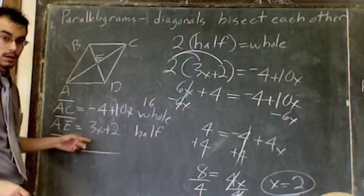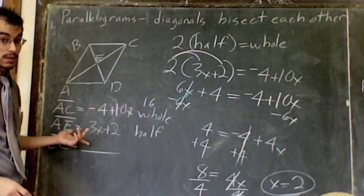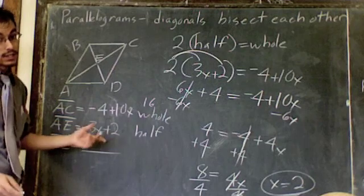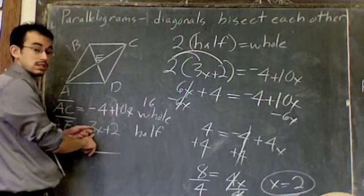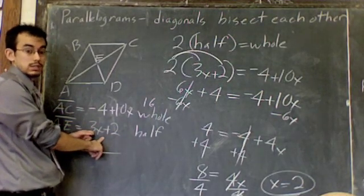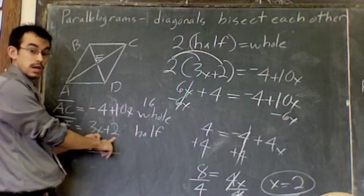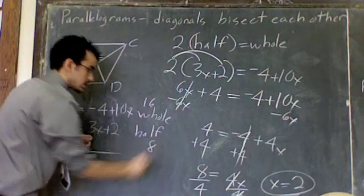Plug it in for the half. Well, I have a pretty good idea that it's going to be 8 because half of 16 is 8. Let's see if it is. If X is 2, this says 3 times 2 which is 6. And 6 plus 2 is 8. So the half is 8.